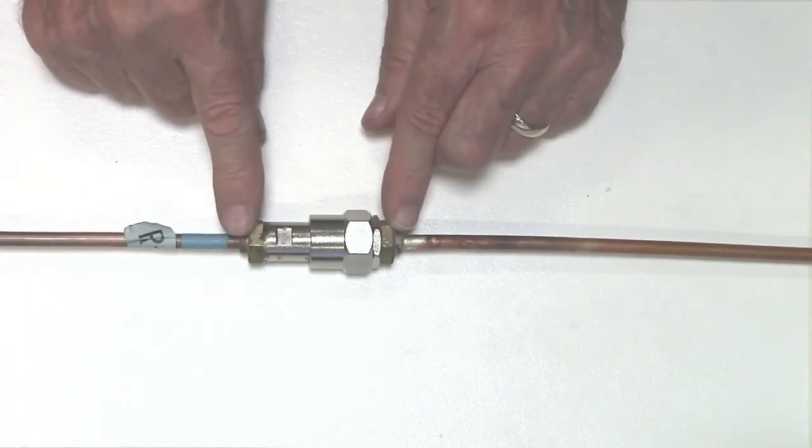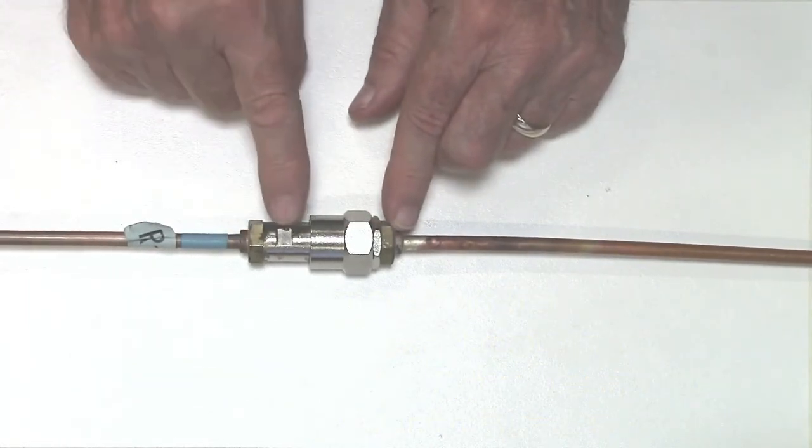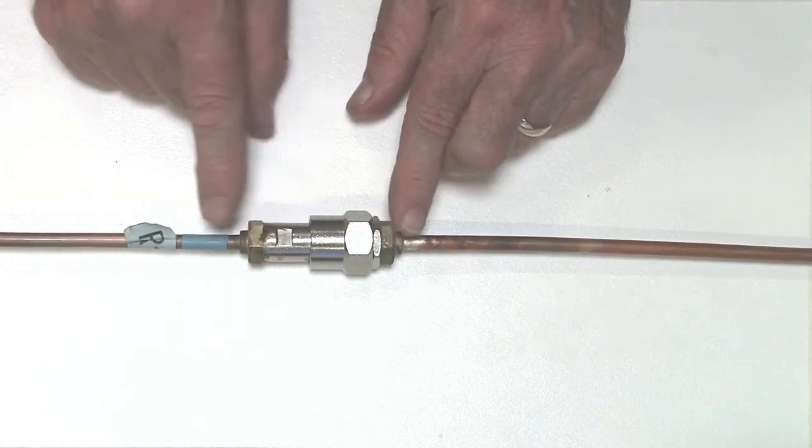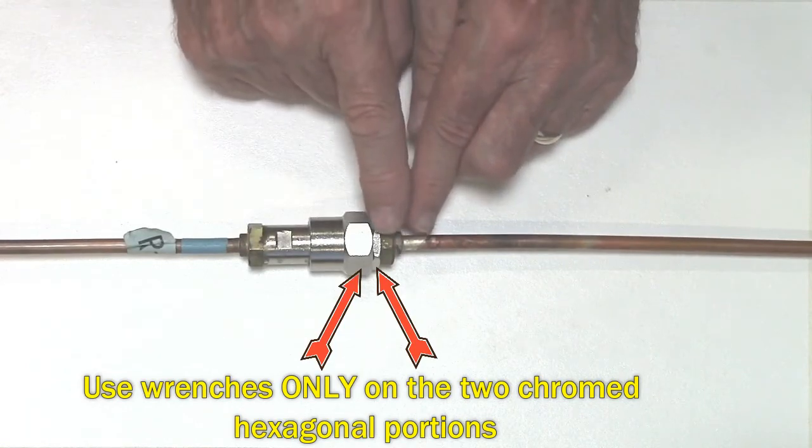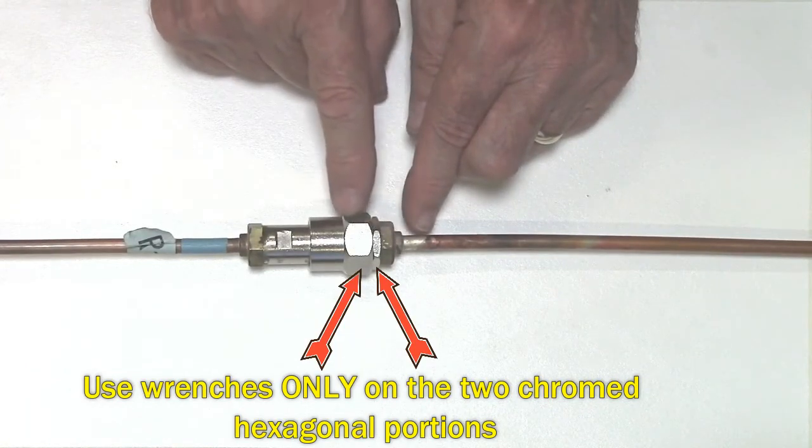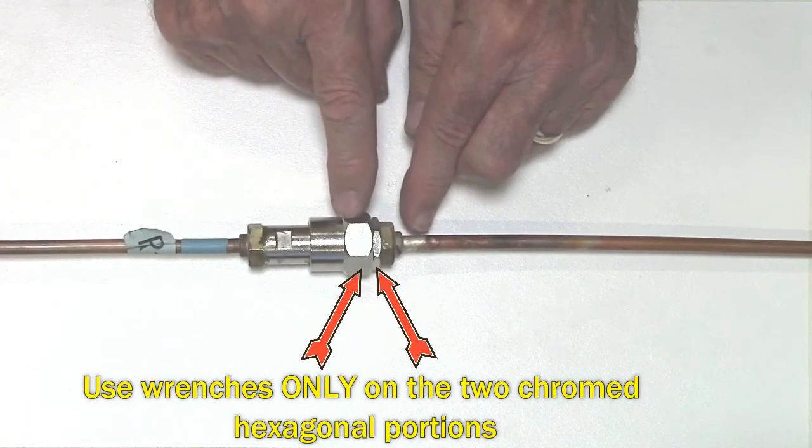Never put wrenches on these brass pieces on the end or this flat spot here. Those are outer limits—do not use anything on those. You only need wrenches on this very thin flat here and this one on the female collar.